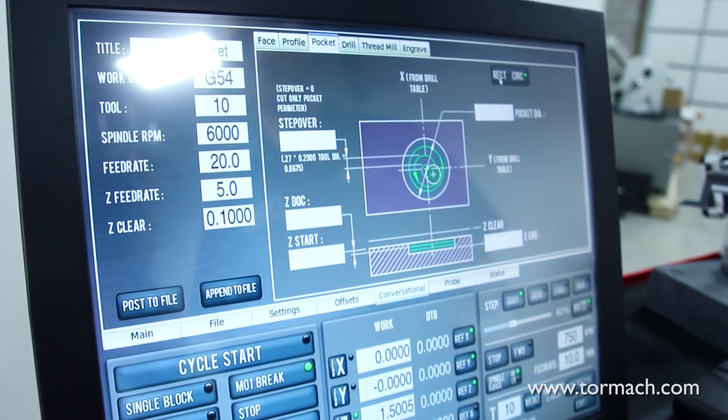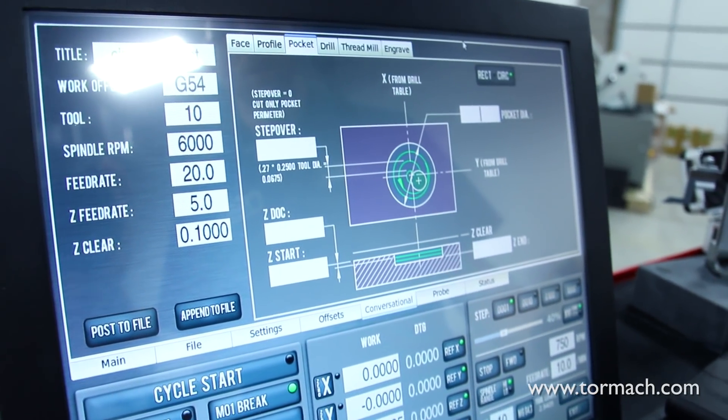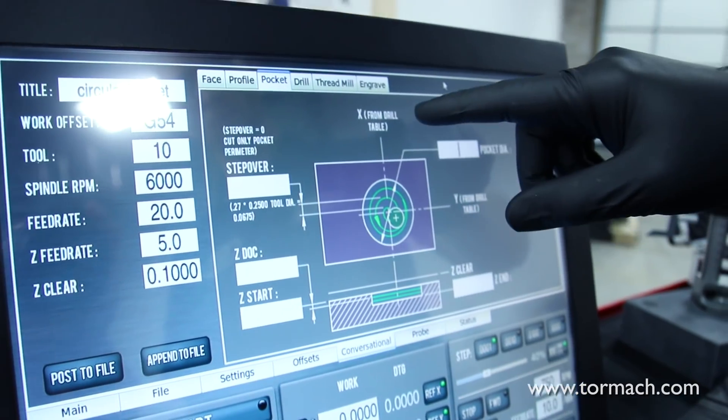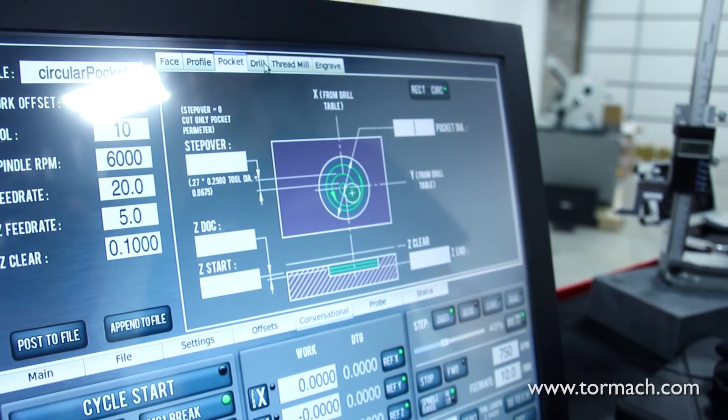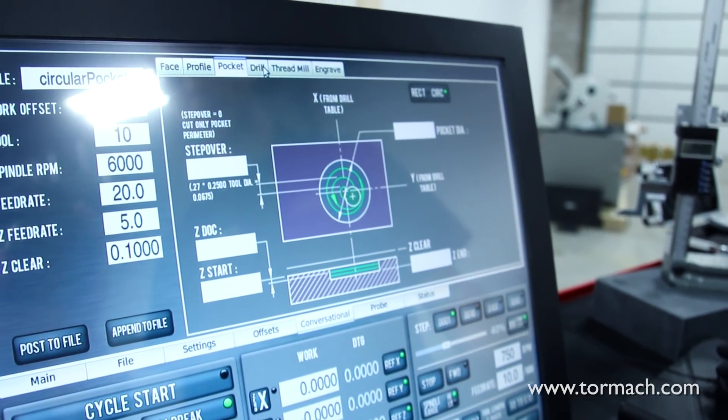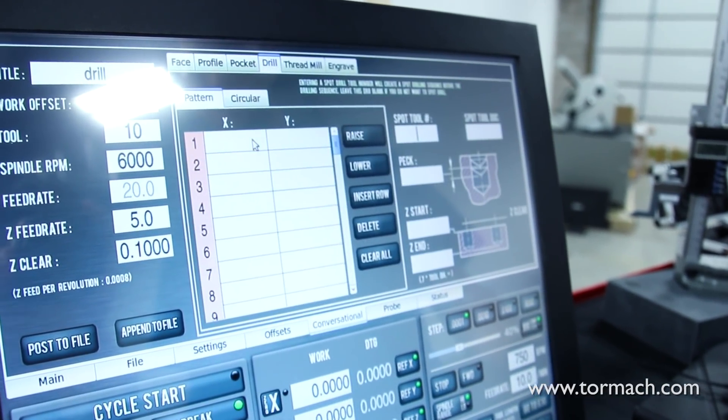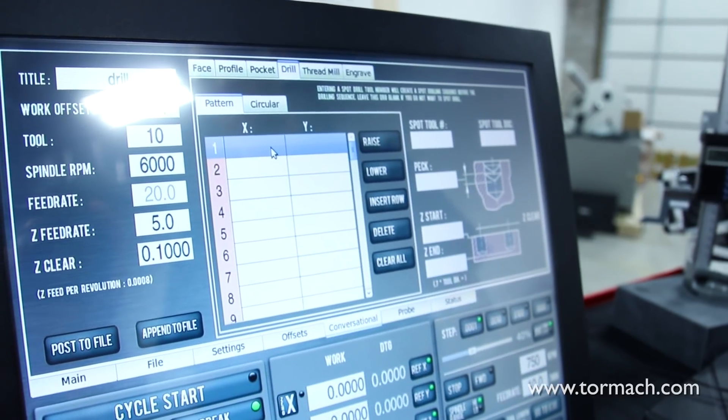For putting in a hole we're going to choose circular pocket. You'll notice here that we list X from drill table and Y from drill table. What that means is we're giving you the ability to put in more than one hole at a time. We use the table and the drill chart to define those locations.